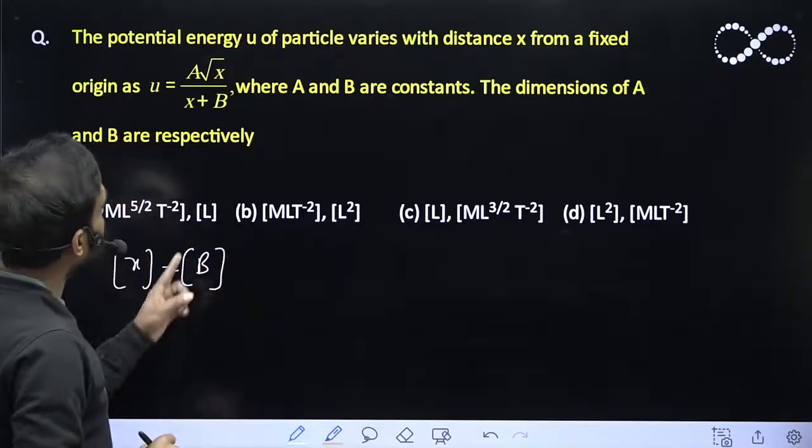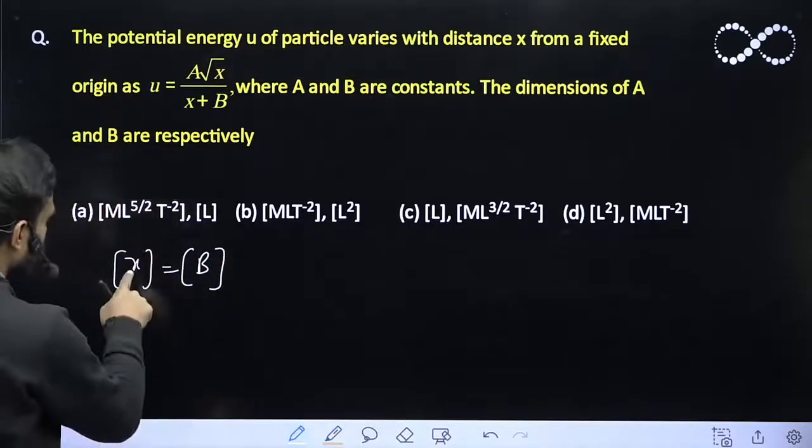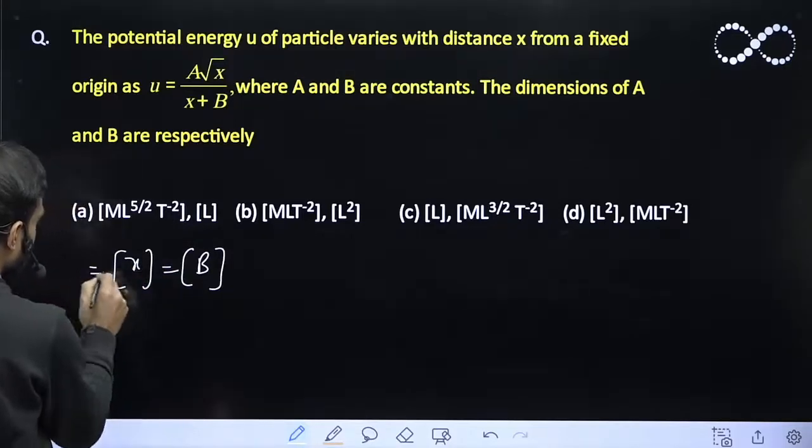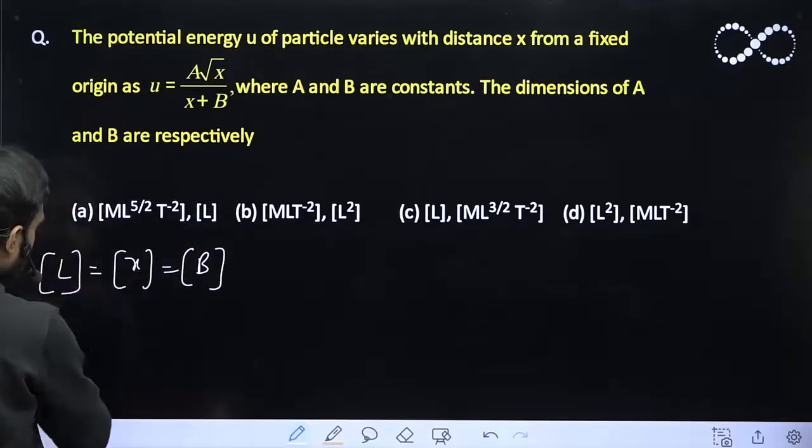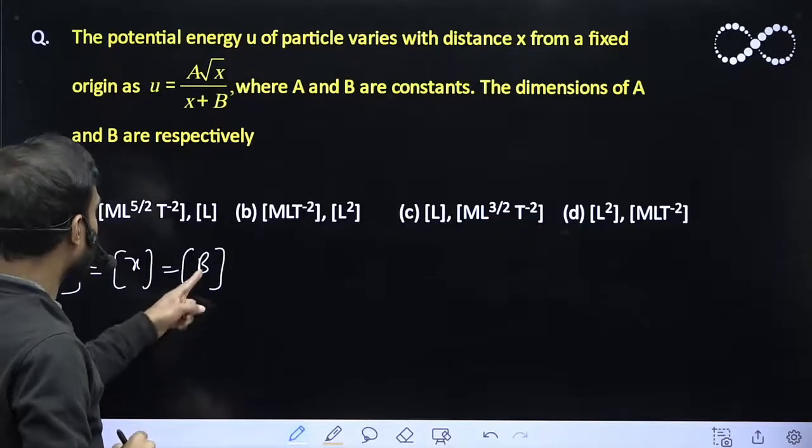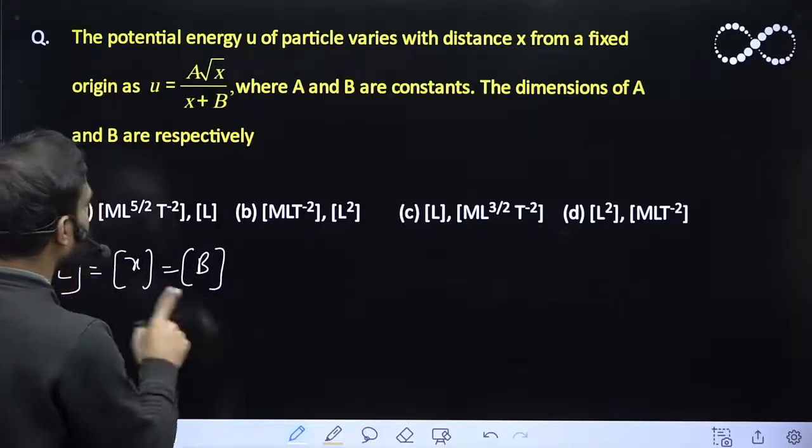In the question it is given x is the distance. This implies the dimension of x must be equal to L because it is distance. So the dimension of B will be equal to L. This I got here.